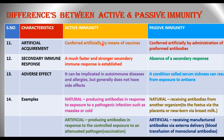Regarding artificial acquirement: active immunity is conferred artificially by means of vaccines — that is the vaccination method. Whereas passive immunity is conferred artificially by administration of pre-formed antibodies, that is ready-made antibodies.